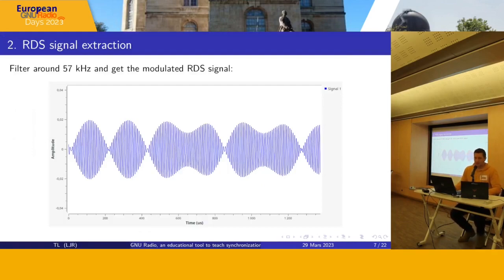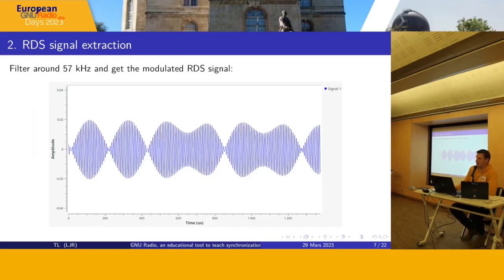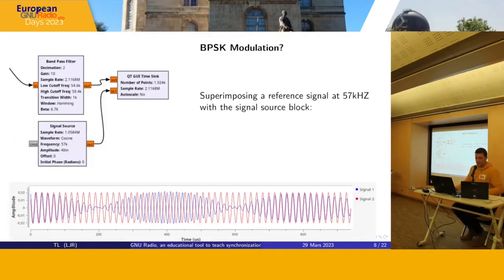First, we filter around 57 kHz and get the modulated RDS signal. But what kind of modulation is it? We see amplitude change, and in the documentation of the protocol we see phase modulation. It is possible to check that by superimposing a reference signal at 57 kHz with the signal source block. We can clearly show students the phase change that will allow us to get the binary information — this is a very interesting illustration of what BPSK is.